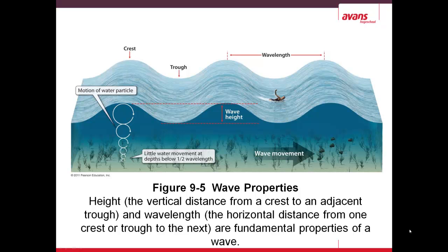Here we have a diagram of a wave. As you see at the top, the wavelength is the distance between two of the same points — in this case the distance between two crests. The crest is the highest point of the wave, the trough the lowest point. The height of a wave is the distance between the crest and the trough. Wave movement is the movement of the wave itself, not of the individual water particles. In deep water, the motion of the water particle is circular — larger circles at the surface and smaller as you go deeper into the sea.